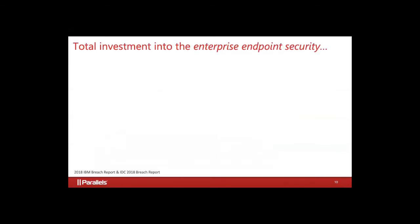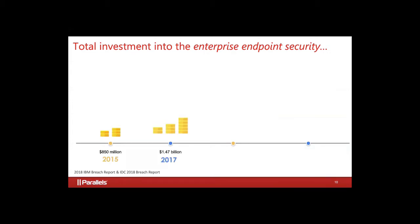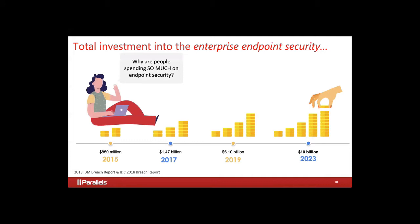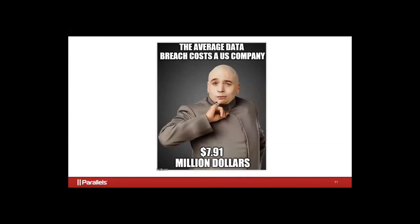In the next couple of years, endpoint security spending is dramatically increasing. In 2015 it was $850 million, but by 2023 it's going to be over $10 billion. Why? Because when a breach happens, it costs money, and it's also a PR nightmare — especially if you're a public company or your customers are exposed. This is why organizations are spending so much money on security now.